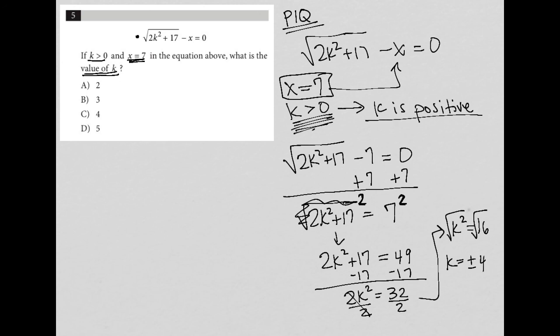So I'm not going to consider the negative 4 option. Therefore, k is 4, and my answer is choice C.